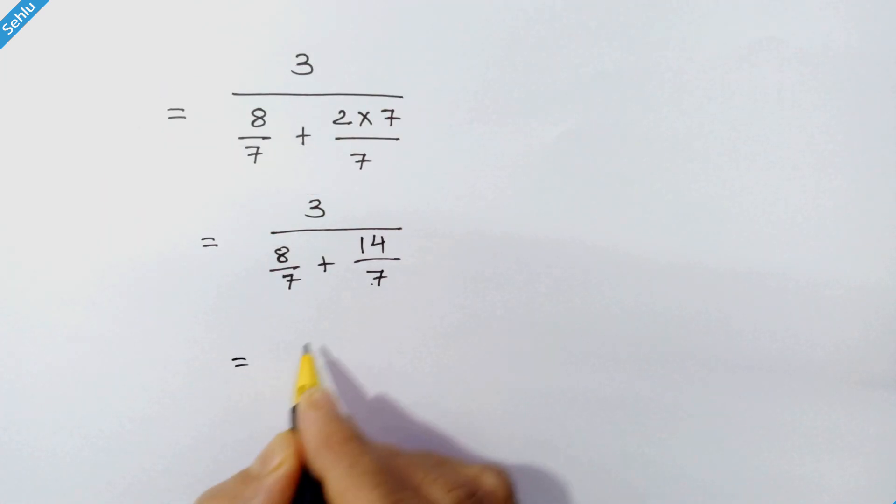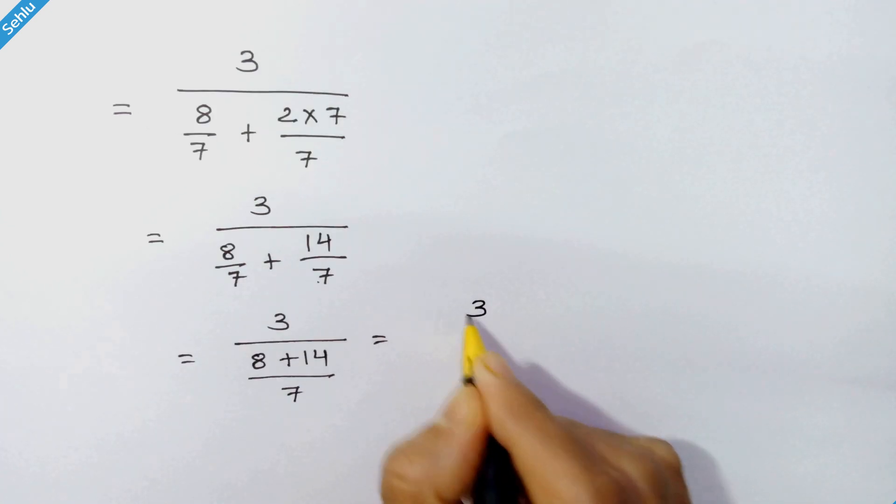So it will be 3 upon 8 plus 14 upon 7. So it will be 3 upon 22 upon 7.